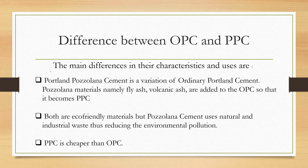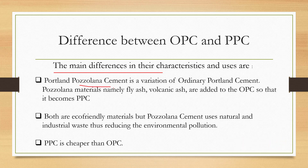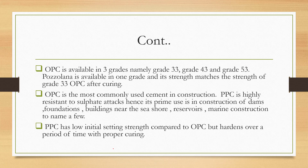Portland Pozzolana Cement is a variation of ordinary Portland cement — fly ash and volcanic ash are added to OPC to form PPC. Both are eco-friendly materials, but pozzolana cement uses natural and industrial waste, thus reducing environmental pollution. That is why PPC is cheaper than OPC. OPC is available in three grades: 33, 43, and 53 grade, while pozzolana cement is available only in one grade, which matches the strength of 33 grade OPC.